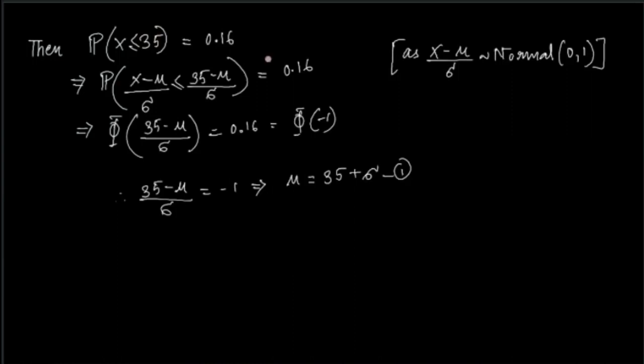So X follows a normal (μ, σ²) distribution. Let's do some algebraic manipulation. Let's subtract the mean first and then divide by the standard deviation. If X is normal (μ, σ²), then (X - μ)/σ is a standard normal variable. So this is some Z which is standard normal.